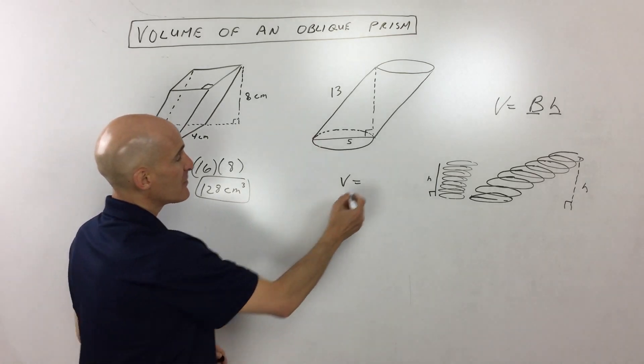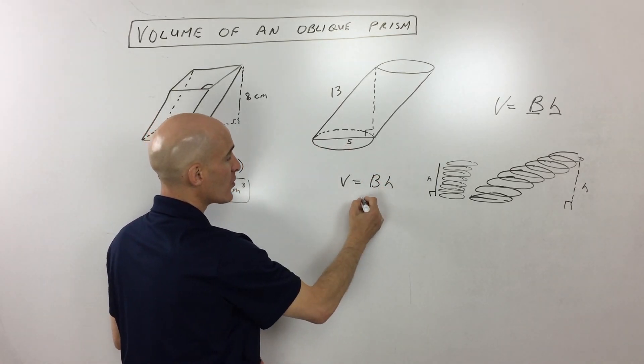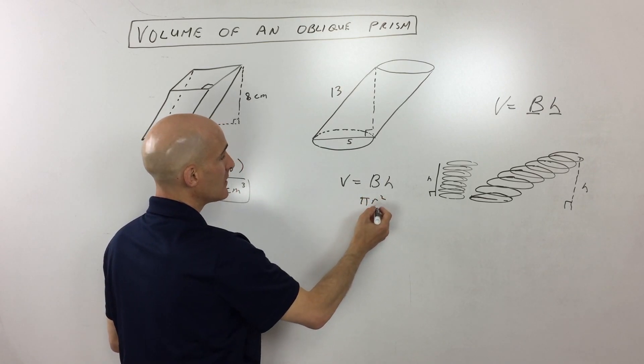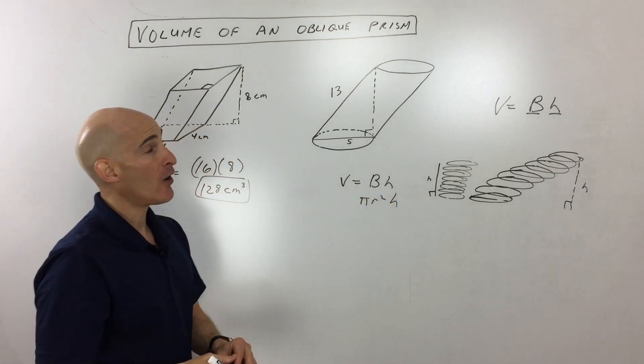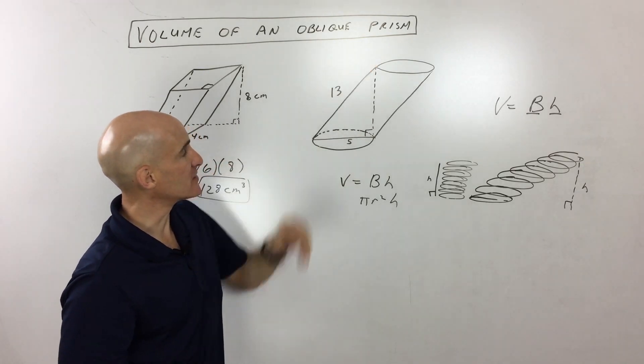For the cylinder now, same thing, we want to find the volume, it's the area of the base, but the base is a circle. So what we want is pi r squared times the height. Now, sometimes they try to trick you a little bit, they give you this angled height here, 13.